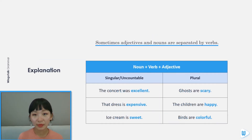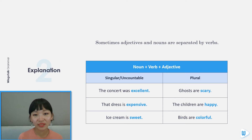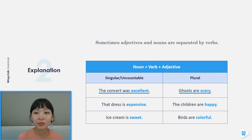Sometimes, adjectives and nouns are separated by verbs. Noun plus verb plus adjective. For example, singular: the concert was excellent. Plural: ghosts are scary.